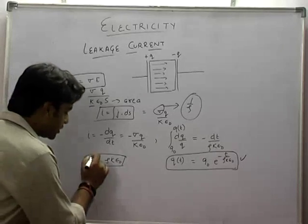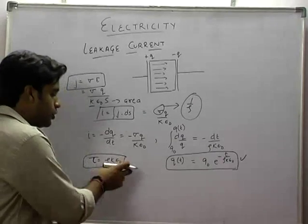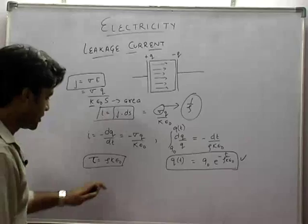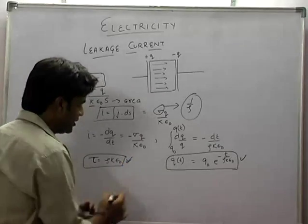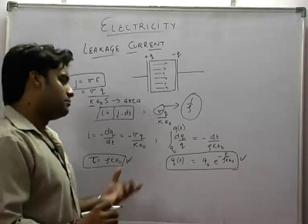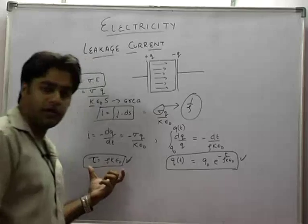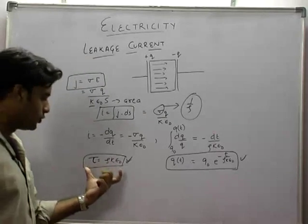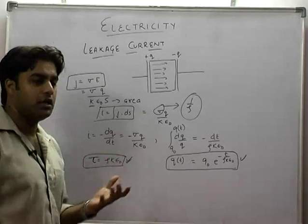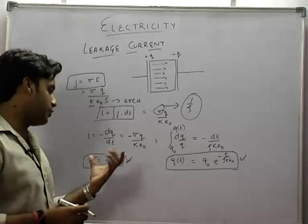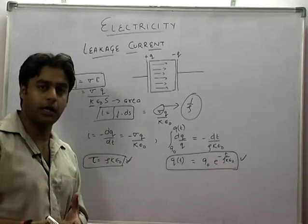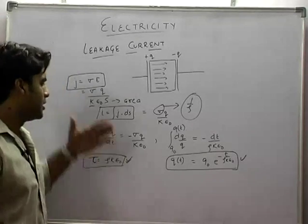So here, the time constant T will be rho K epsilon naught. This is the shortcut. If it comes, something like that you have to know the T value. Generally, the question is the way to frame. If you know the T value, you will answer it. But you should know the whole derivation.